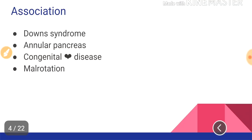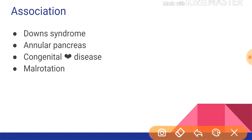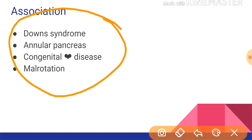Coming to the associations of duodenal atresia with other congenital anomalies. Duodenal atresia has a high association with Down syndrome or trisomy 21. It is also associated with annular pancreas, which per se can be a cause of duodenal obstruction. Then congenital heart disease — many times the cause of death of a child after duodenal atresia is congenital heart disease. Malrotation can also be associated with duodenal atresia.